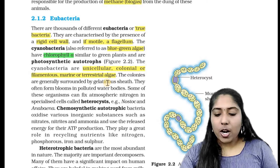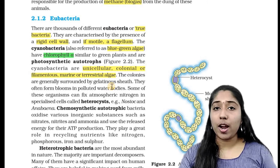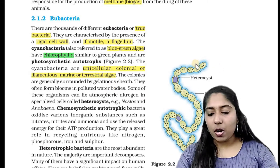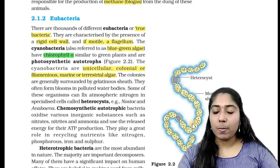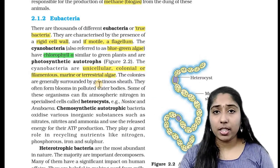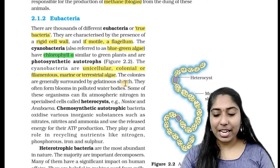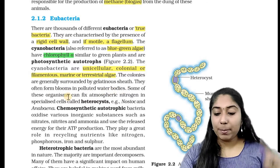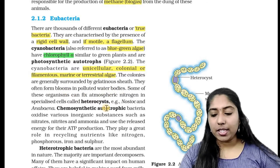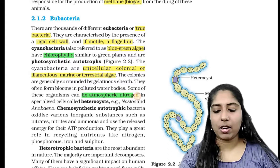Cyanobacteria colonies are generally surrounded by a gelatinous sheath, also called a mucilaginous sheath. They can fix atmospheric nitrogen in specialized cells called heterocysts.